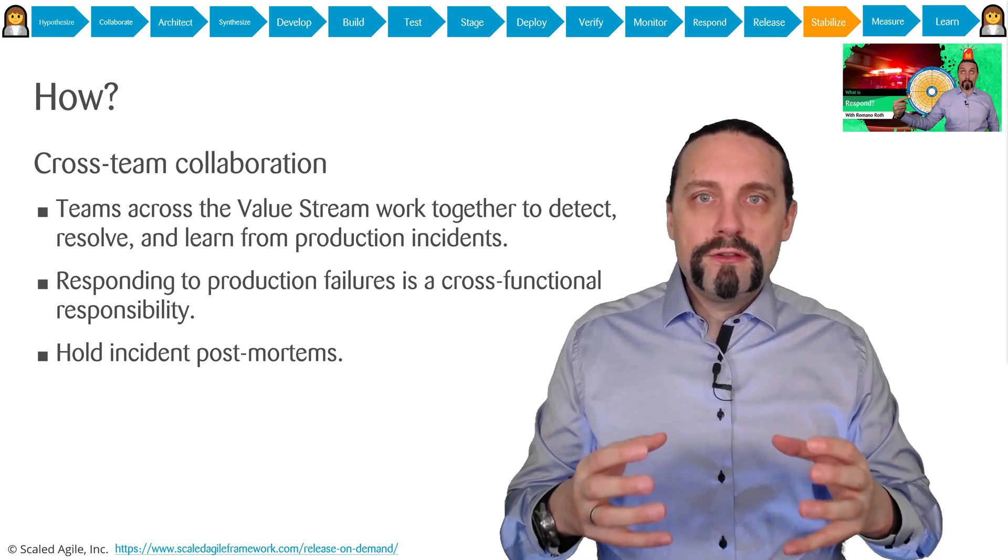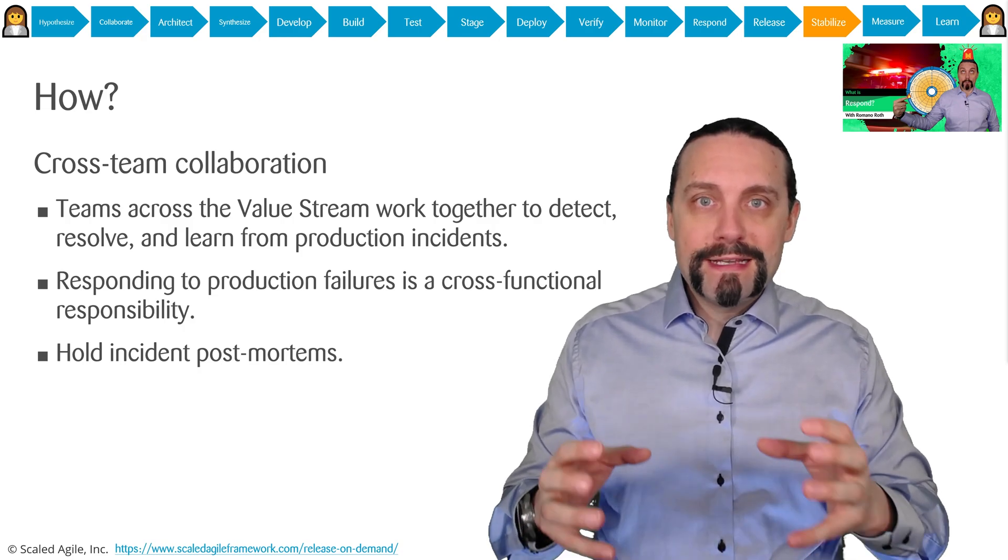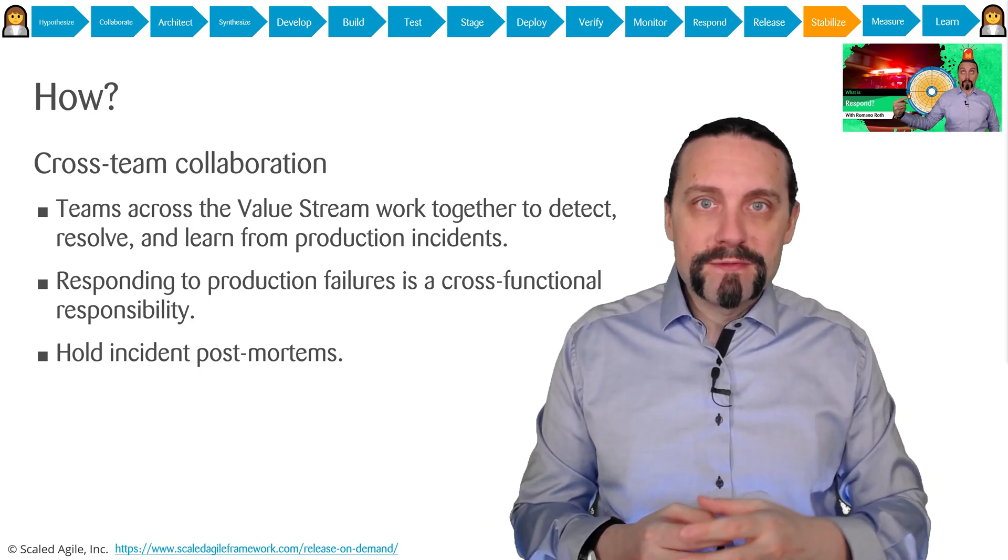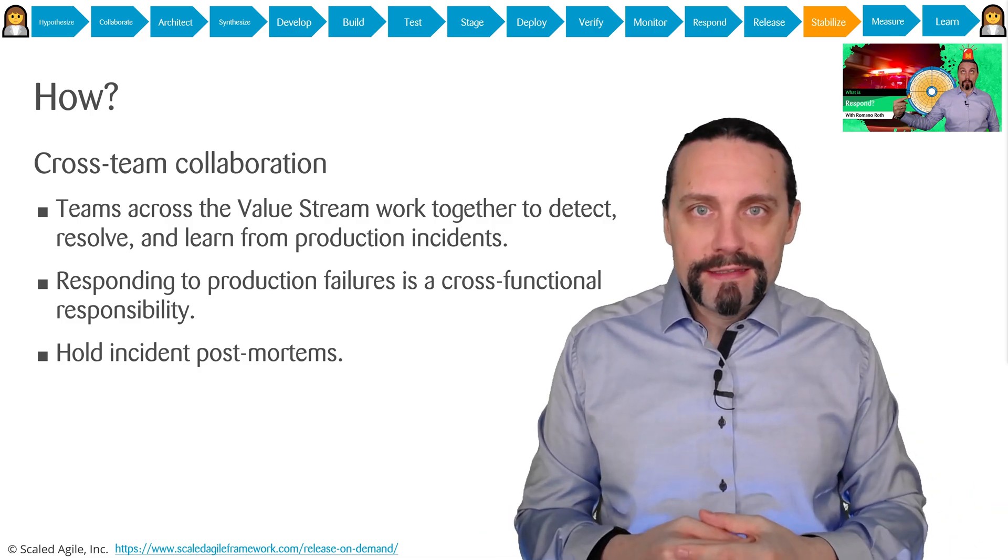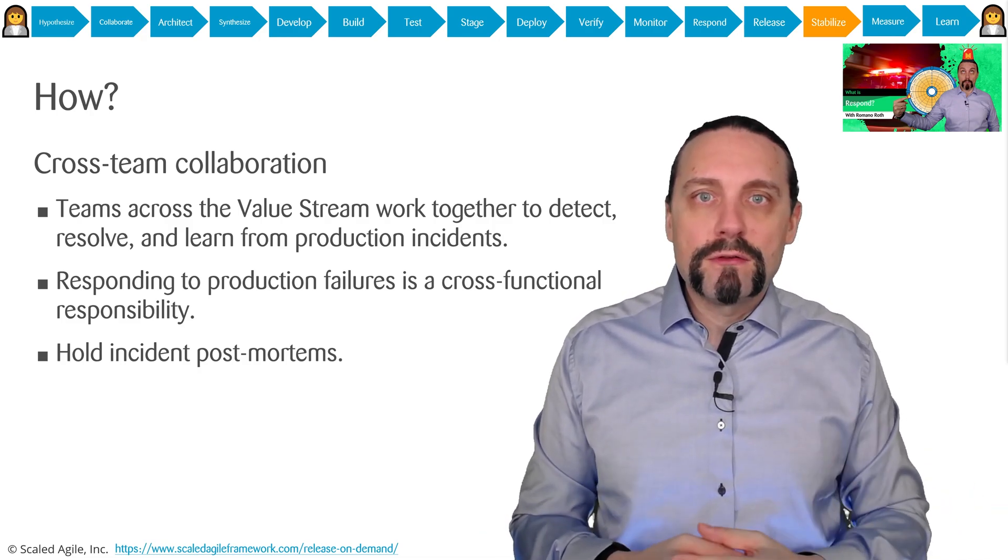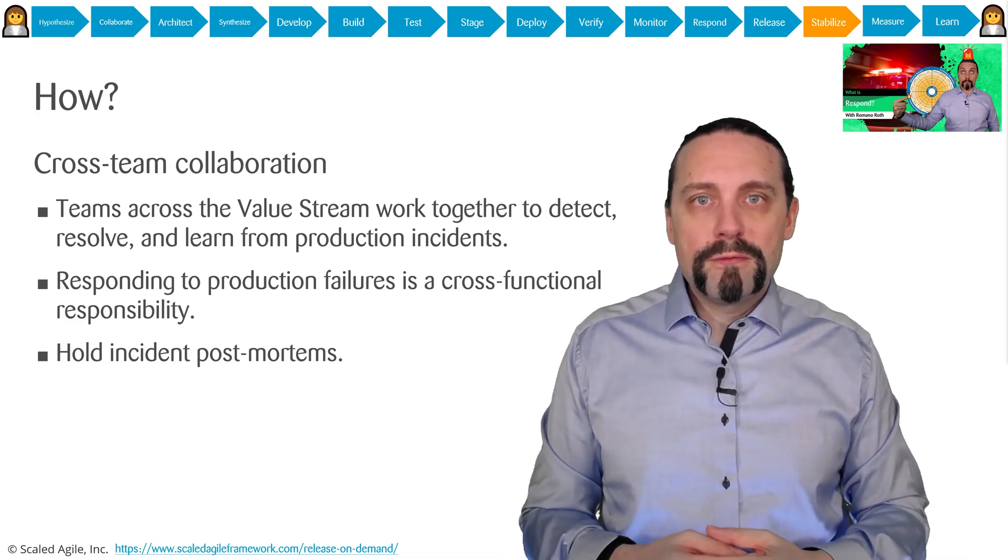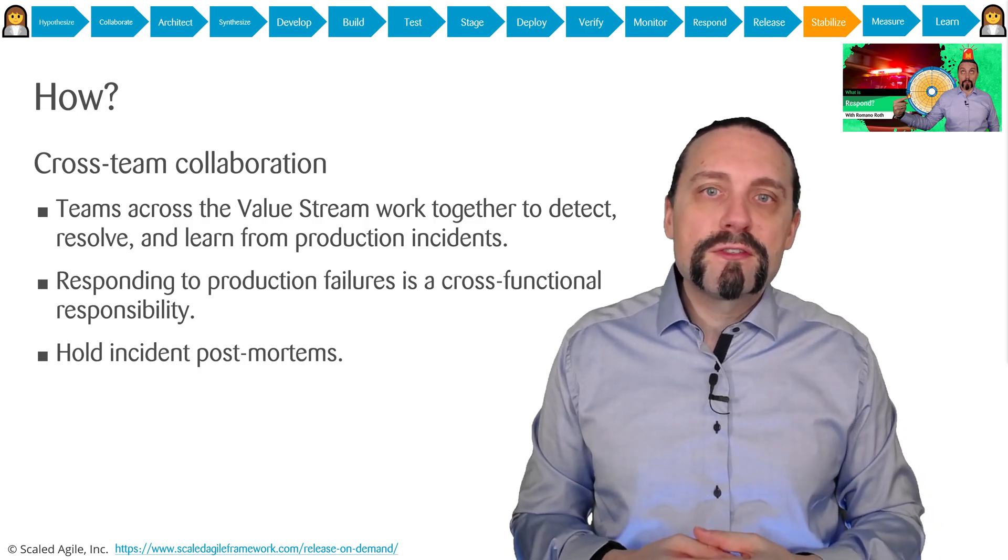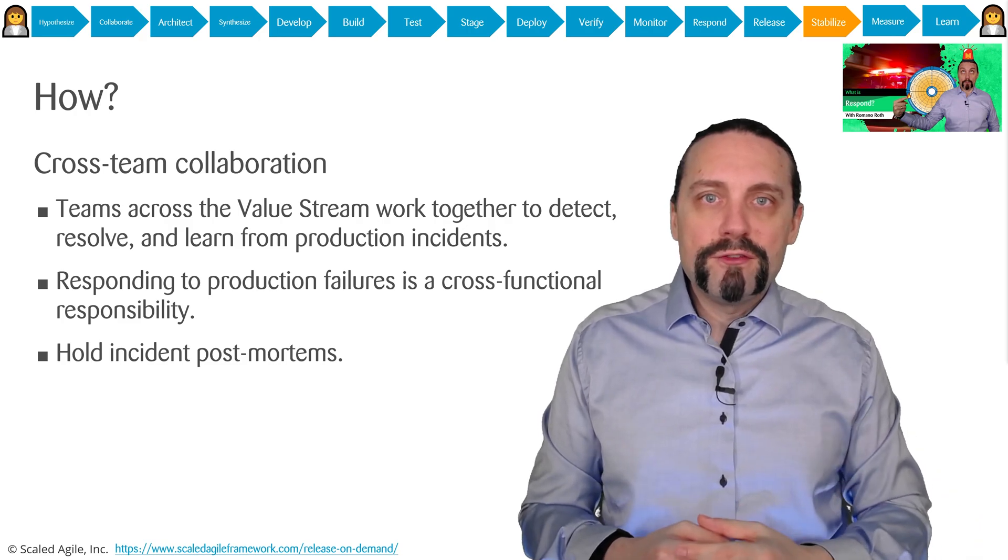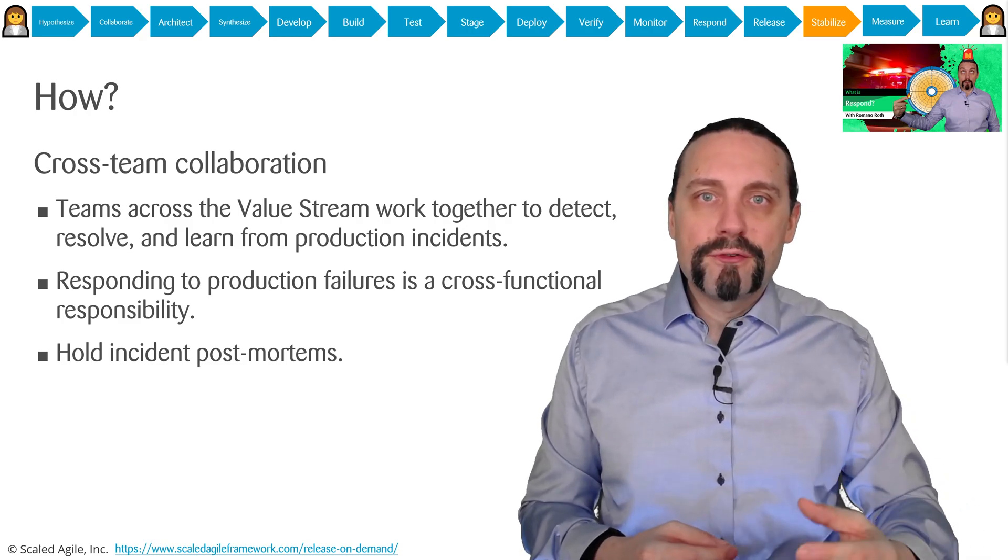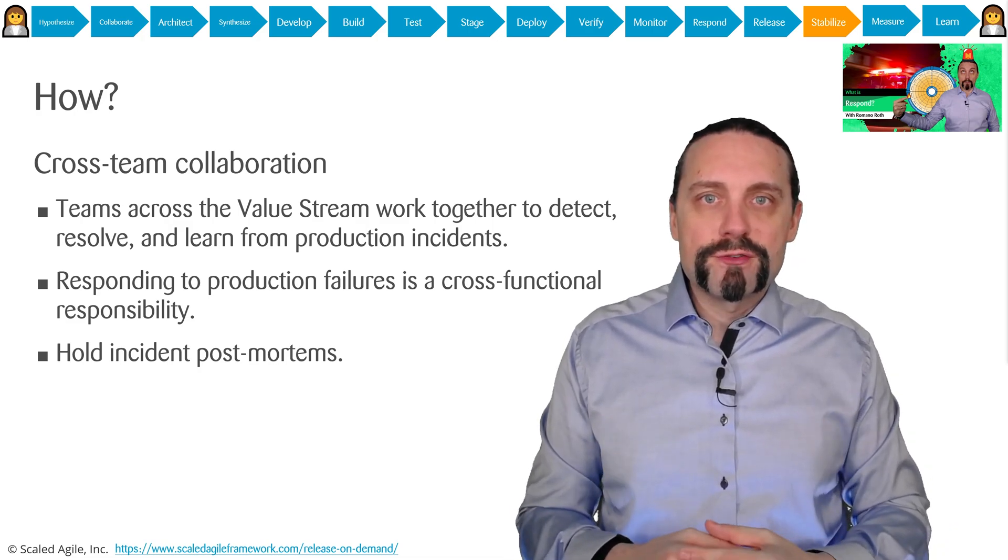Now the whole team which works across the value stream is analyzing the problems we have in production. They work together, not against each other, and they solve the problems together. After the problem, we do an incident post-mortem where we identify what we can do to prevent such an incident from happening again and implement measures for that.